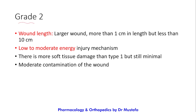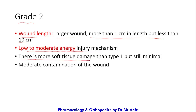Grade two: the wound is larger, more than one centimeter but less than ten centimeters in length. Remember, grade one is less than one centimeter and grade two is from one to ten centimeters. It is caused by a low to moderate energy injury mechanism, there is more soft tissue damage than grade one but it is still minimal, and there is moderate contamination of the wound.